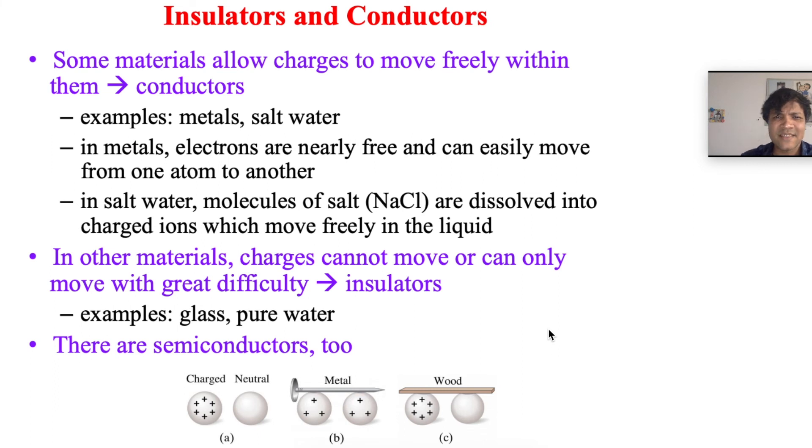Some materials allow charge to move freely - we call them conductors, like metals and salt water. Other materials do not allow electrons to move freely - we call them insulators, like glass. In this case, the metal is a conductor because it allows charge to move.